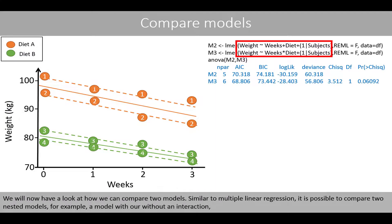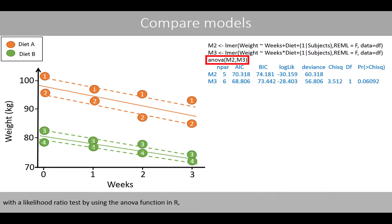We will now have a look at how we can compare two models. Similar to multiple linear regression, it is possible to compare two nested models, for example a model with or without an interaction, with the likelihood ratio test by using the ANOVA function in R. The first model should be the null model, which is the simplest model with fewest parameters.